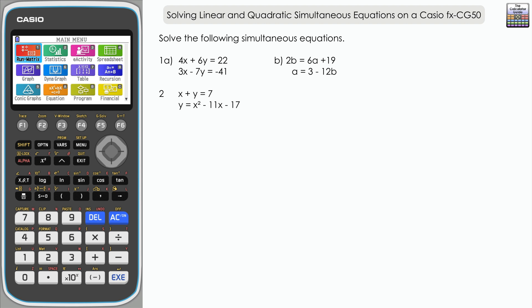If we take a look at the first one, 1a, we've got 4x plus 6y equals 22 and 3x minus 7y equals negative 41.